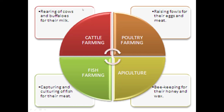Cattle farming is the rearing of cows and buffaloes for their milk. Poultry farming is raising fowls for their eggs and meat. Apiculture is keeping honey bees for their honey and wax. Fish farming is the capturing and culturing of fish for their meat. All of these are included under agriculture.